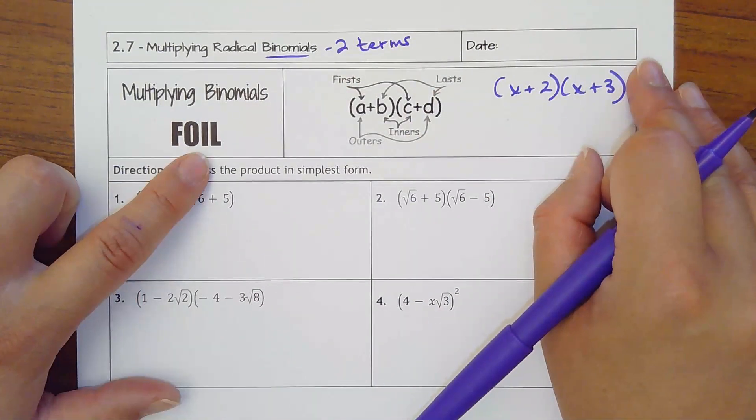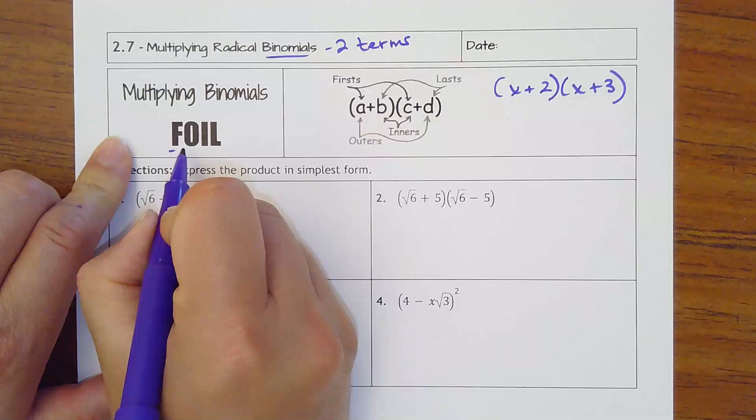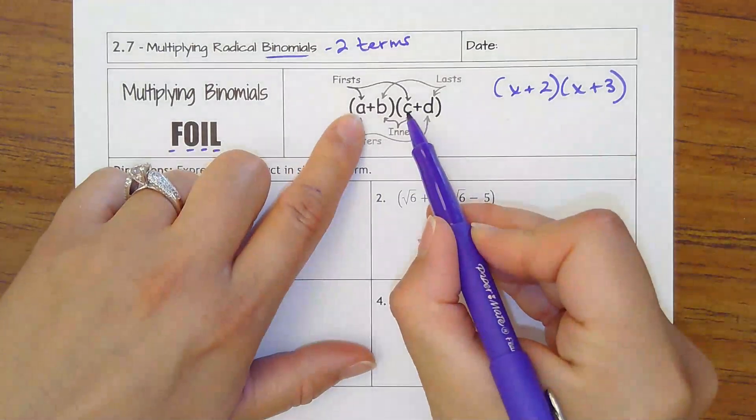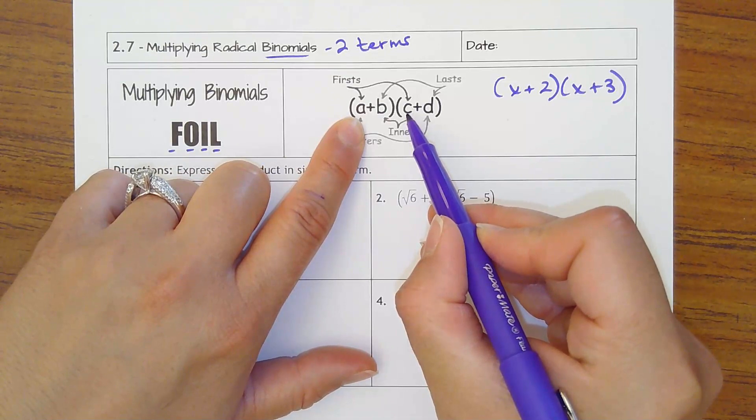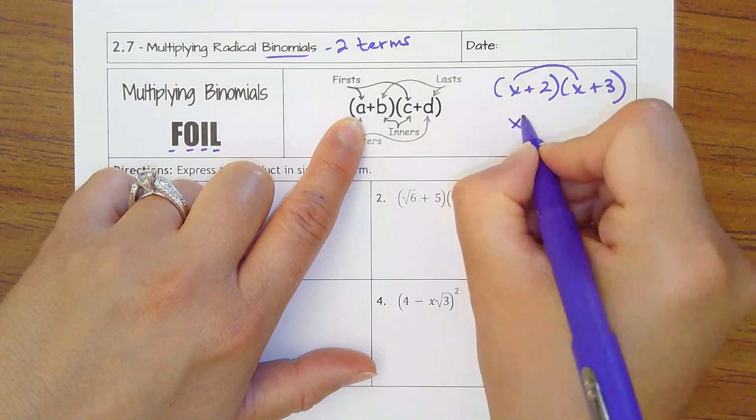Hoping you remember the acronym FOIL. It stands for multiply the first terms, then the outer, then the inner, and then the last terms. First are the two terms that come first in each set of parentheses. So in this problem, to multiply these binomials, I would take x times x and get x squared.